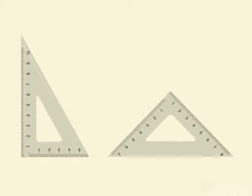Another tool is set squares, also known as triangles. They come in flavors of 30, 60, 90 degrees and 45, 45, 90 degrees.